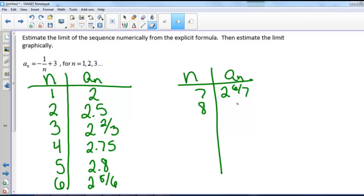If n equals 8, then we have 3 minus 1 eighth, so we are getting 2 and 7 eighths. For 9, we get 3 minus 1 ninth, so that's 2 and 8 ninths.